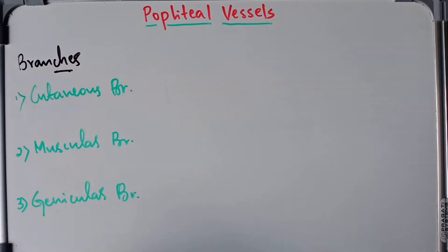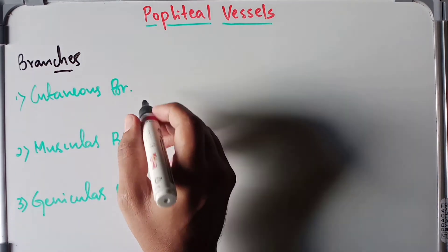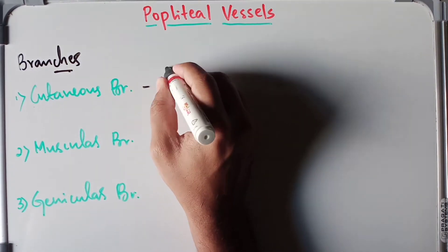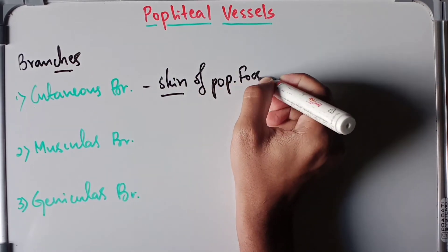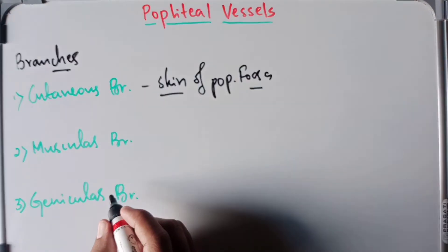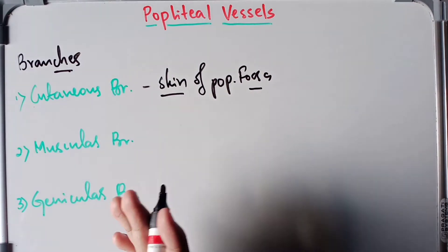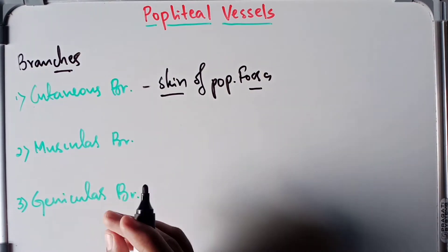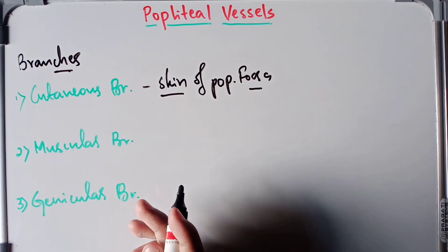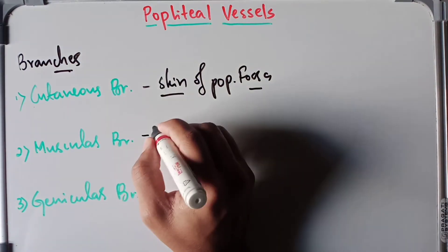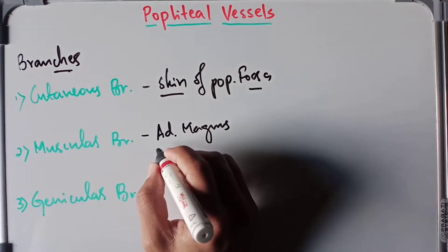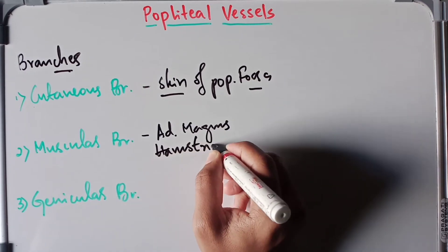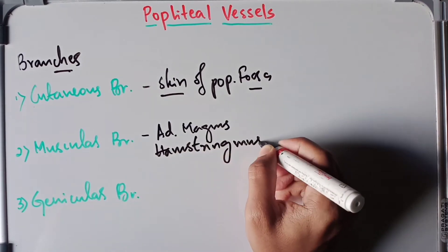When it comes to the cutaneous branches, they pierce the roof of the popliteal fossa and supply the overlying skin of the popliteal fossa. The muscular branches may be large or small and they supply the adductor magnus as well as the hamstring muscles, which are the muscles of the posterior compartment of the thigh.